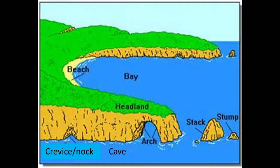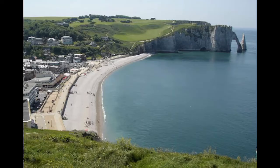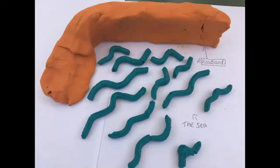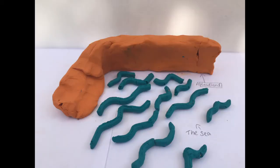This video will explain how coastal landforms are formed by erosion. Here we have a model to show how a headland is eroded by the sea and the weather over time.